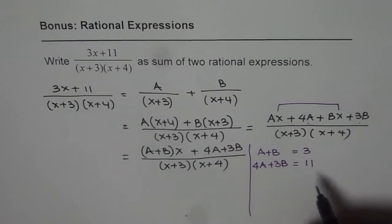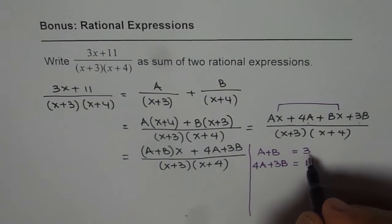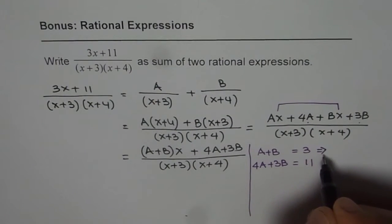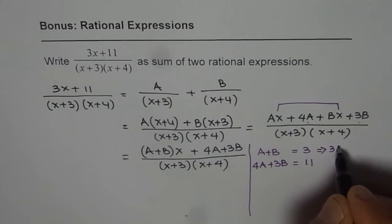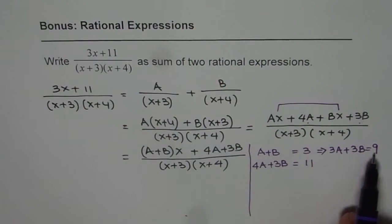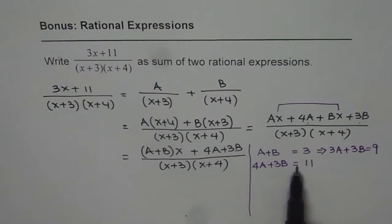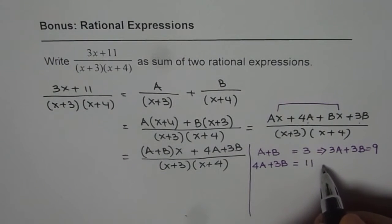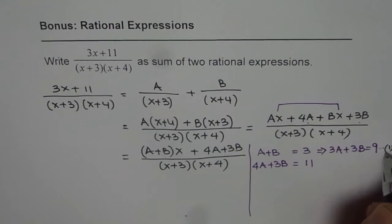Now to do that, we can do substitution or elimination. Let me multiply the first equation by 3. So that should give us 3A plus 3B equals 9. Now we have 3A plus 3B equals 9 and 4A plus 3B equals 11. So let us say this is my equation number 1 and this is my equation number 2.